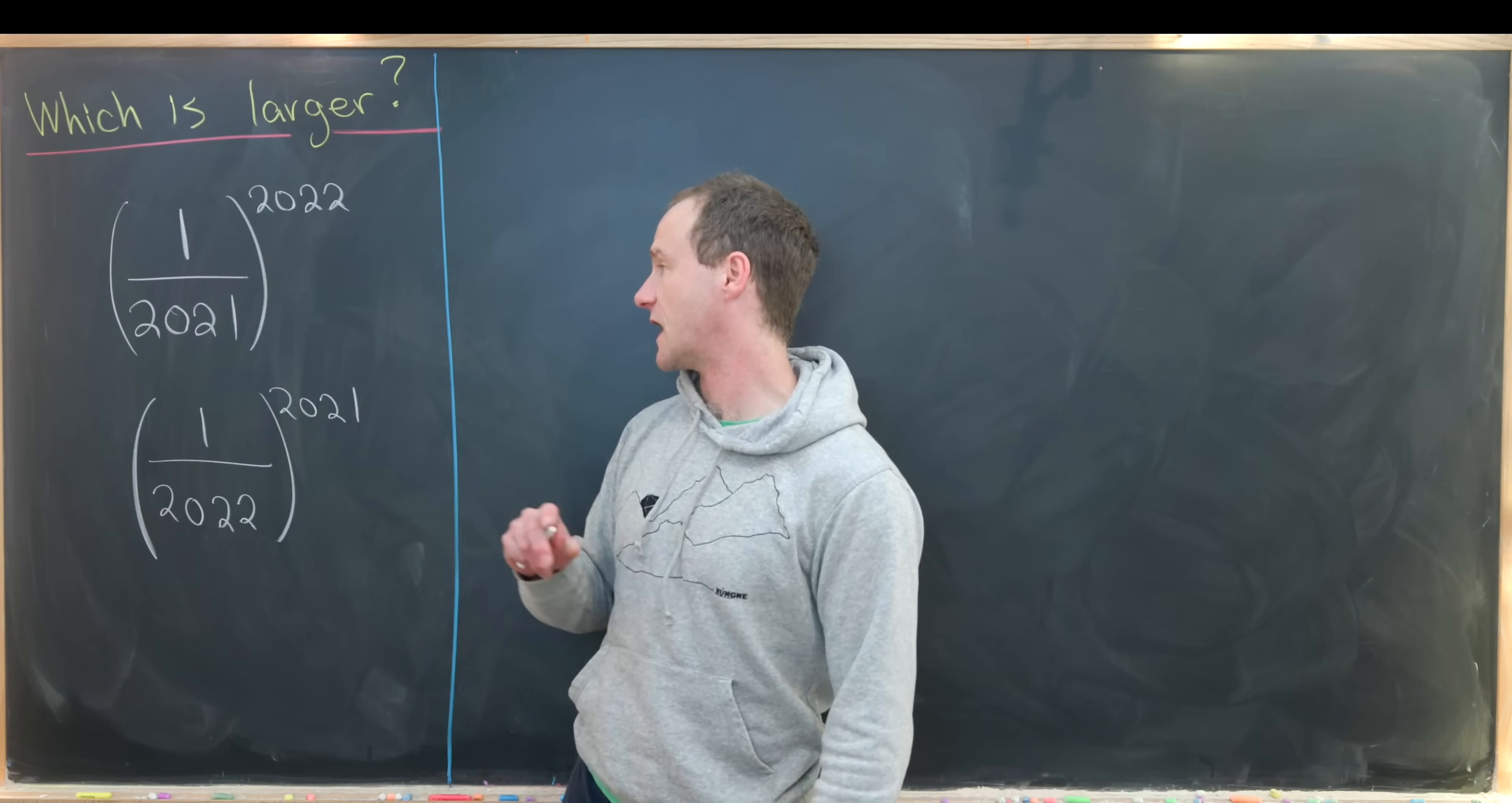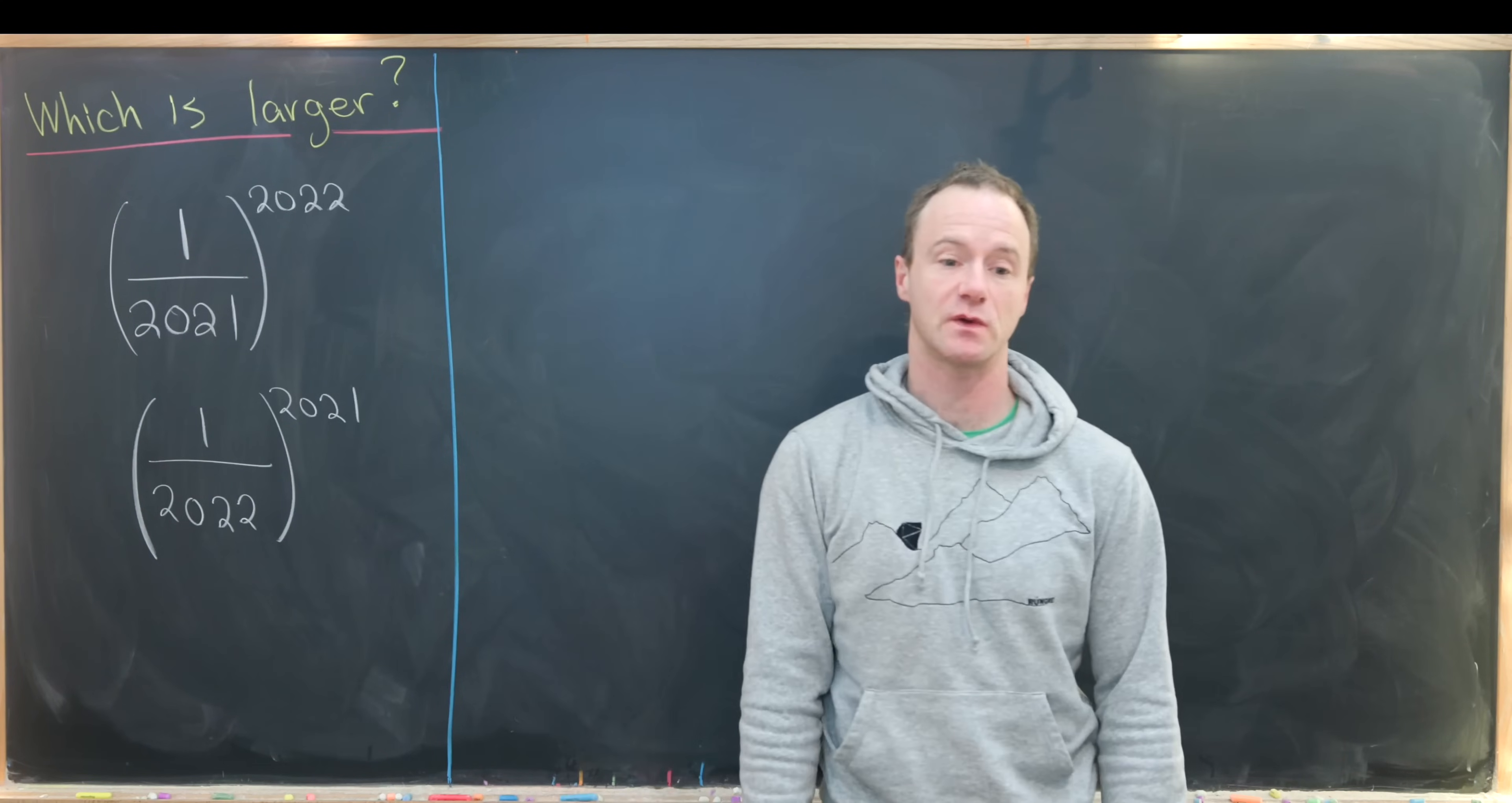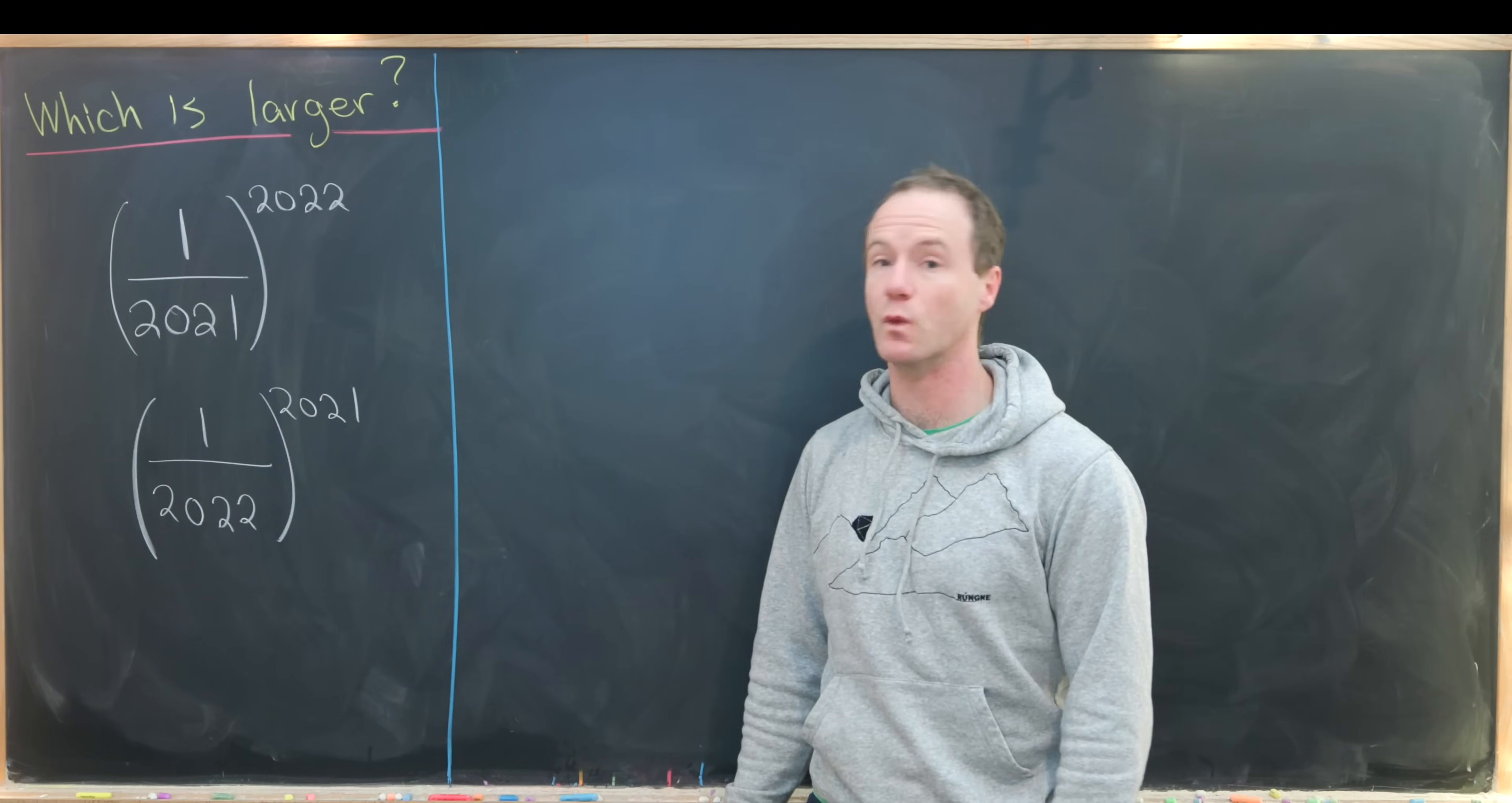The two numbers we're looking at are 1 over 2021 to the 2022 power versus 1 over 2022 to the 2021 power.